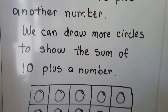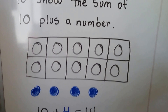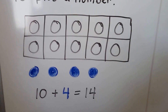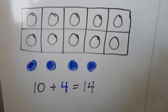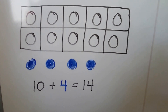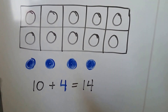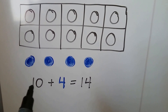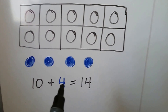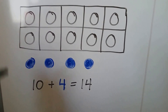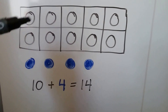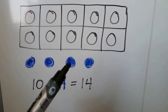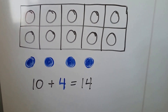We can draw more circles to show the sum of 10 plus another number. Here we have our 10 frame, and we draw four more circles to make 14. 10 plus 4 equals 14. We count: 10, 11, 12, 13, 14.